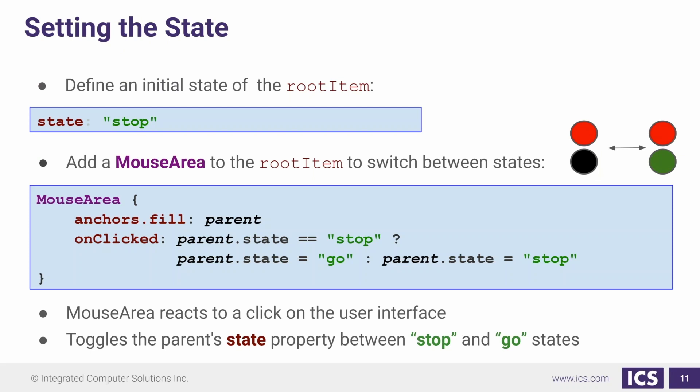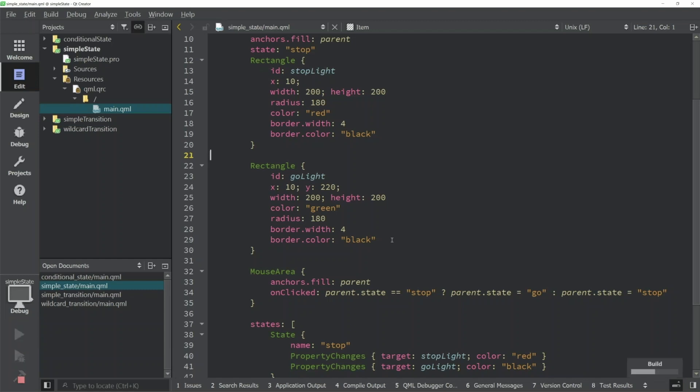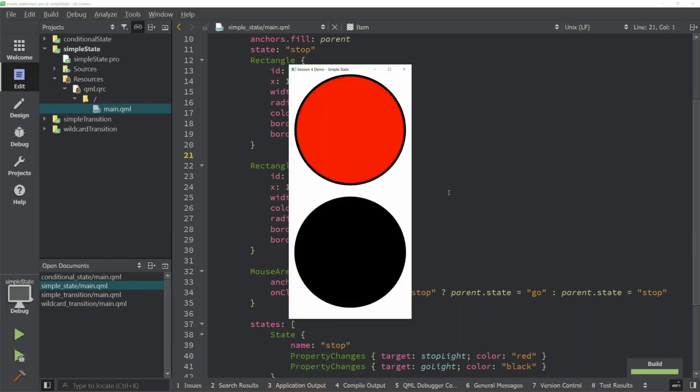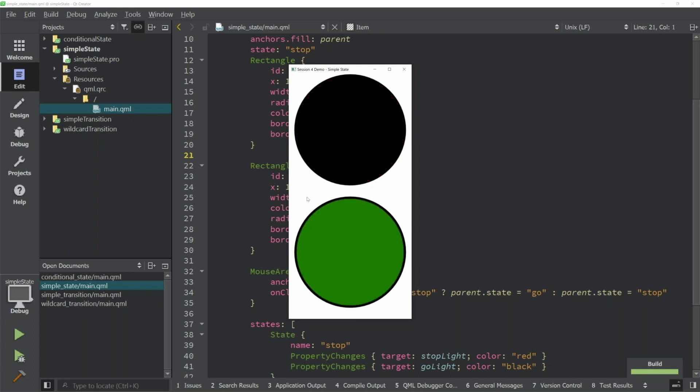If we take a second and run this example, we can see what happens here is our default state, we've entered the stop state, where our light is red for our stop light and our go light is green. And when I click on this, our state will be changed to the go state, where our go light is now green and our stop light is now black.